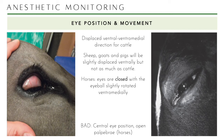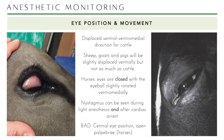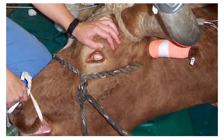Nystagmus can be seen during light anesthesia in horses and also after cardiac arrest — which makes it complicated because you don't know if the horse is waking up or has died. You must correlate nystagmus with all other anesthetic monitoring parameters. This picture of cattle shows how much sclera is visible — the cornea is not visible at all. That is normal during anesthesia — don't be alarmed; it's not dead.